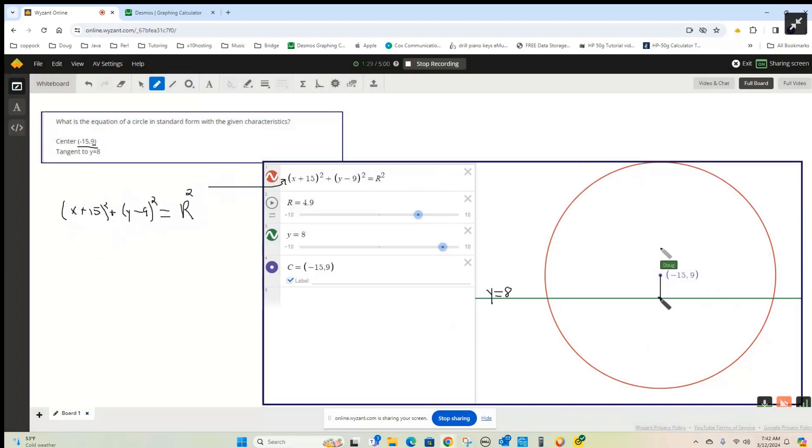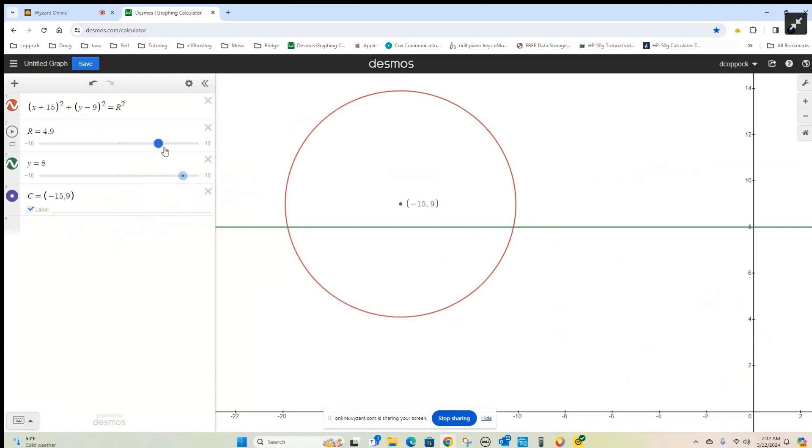And if we could figure out this point right here, then this distance would be the radius. That would be the r. So let's go to Desmos and look what happens when I change r. I want to get r so that the circle just touches right there. And if it just touches right there, the coordinates of this point or the point of tangency are (-15, 8).